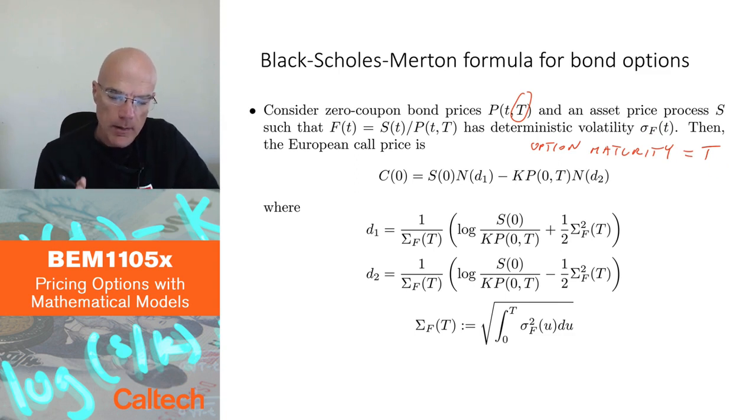So I require that this ratio, the underlying of the option over the my numeraire, which is the bond with the maturity of the option, that that has deterministic volatility. In that case, I do have a Black-Scholes type formula. It looks similar to Black-Scholes. This is at time zero. It's the underlying asset times N of D1, where I'll tell you what the D1 is, minus, it's kind of discounting strike price. It would be like a bond, K bonds, or getting K dollars at the maturity, but then discounted by the bond price.